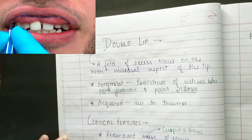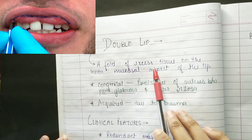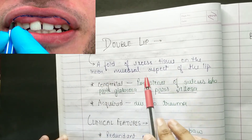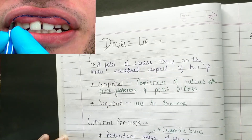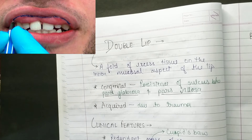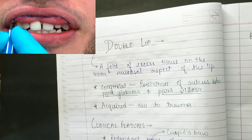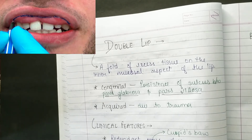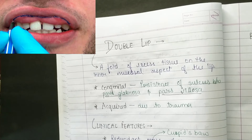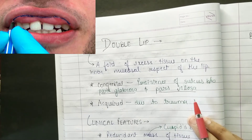Look at the photo — it will be very helpful. It is a fold of excess tissue on the inner mucosal aspect of the lip. Generally it is seen in the upper lip, and it is the most common condition of the upper lip. Because the excess tissue will fold, it will appear as a double lip — you will see one lip below the upper lip.